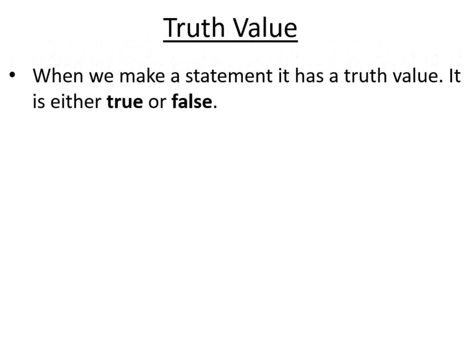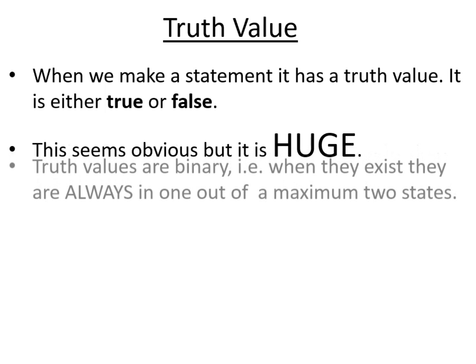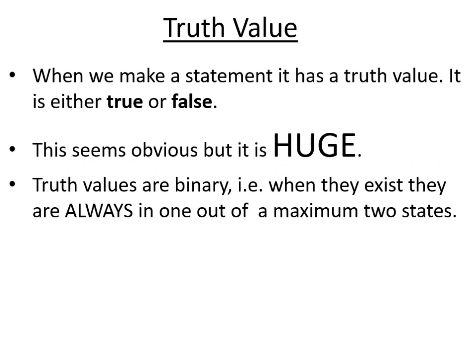So I mentioned this term, a truth value, and that is simply the idea of a statement being true or false. So this would seem kind of obvious, but it is impossible to overestimate how important it is. It is huge. Truth values are binary. In other words, when they exist, they are in one of these two states, true or false.